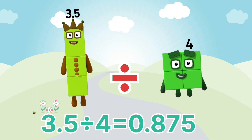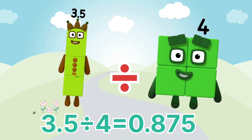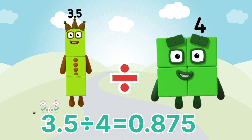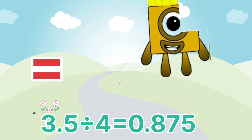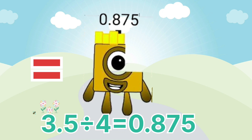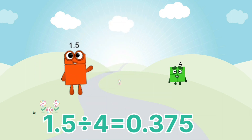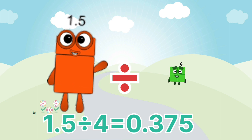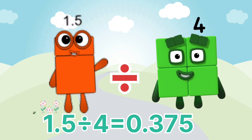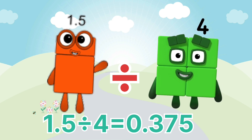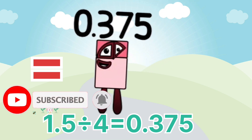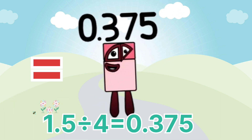3.5 divided by 4 equals 0.875. 1.5 divided by 4 equals 0.375.